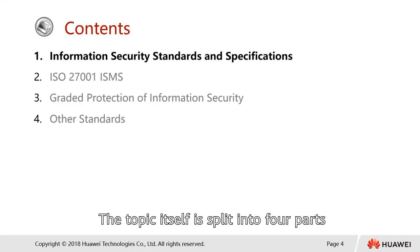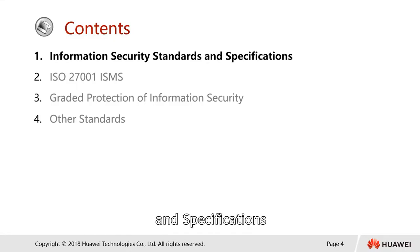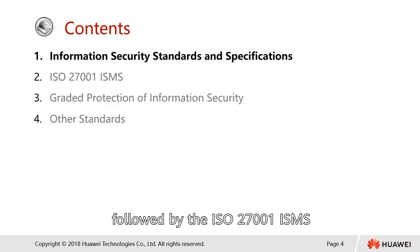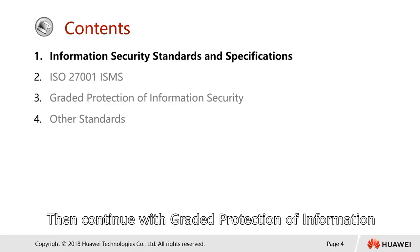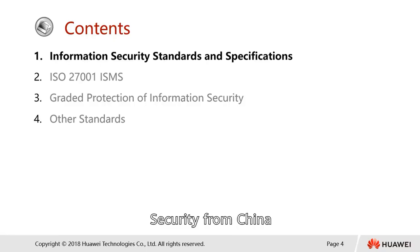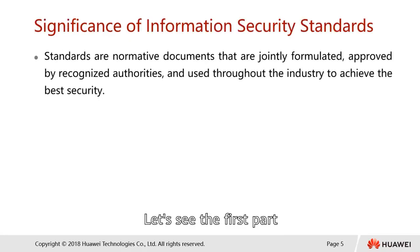The topic itself is broken into four parts: part one covers information security standards and specifications, followed by ISO 27001 ISMS, then graded protections of information security from China, and finally other standards. Let's see the first part.